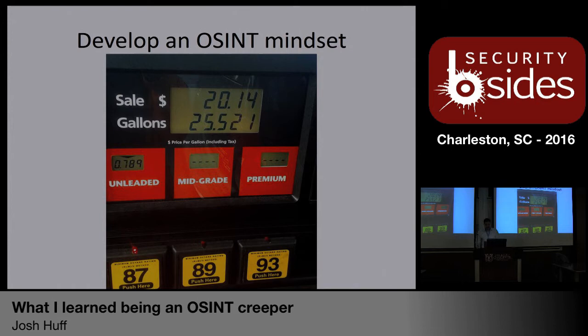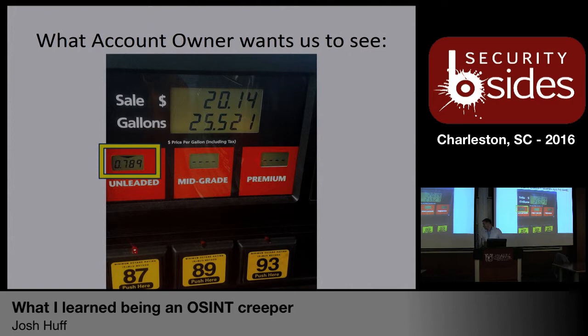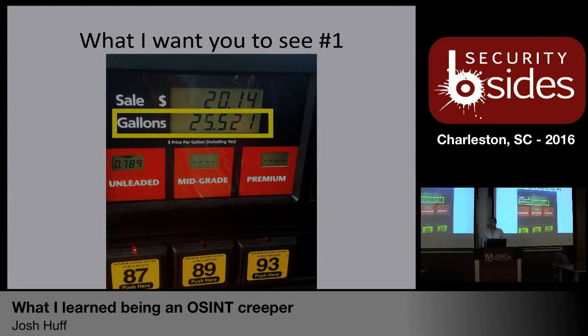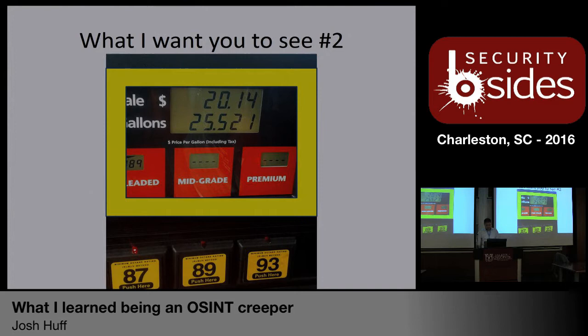One of the first exercises I like to talk about is to help you develop an OSINT mindset. This picture came from Facebook last year — the caption read something to the effect of 'check out this sweet deal at Kroger Gas.' Take a look at it and notice what the account owner wants you to see: 78 cents a gallon. They just got a sweet deal and snapped a picture to brag to all their friends. What I want you to see: they just put 25 and a half gallons of gas into something. You can pull a couple of inferences and maybe say it's a truck or an SUV — a larger vehicle. Second thing I want you to notice: the background.